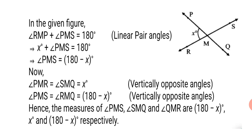Now we can find the vertically opposite angles. Angle PMR equals angle SMQ equals x degrees — reason: vertically opposite angles. Angle PMS equals angle RMQ equals 180 minus x degrees — reason: vertically opposite angles. Hence, the measures of angle PMS, angle SMQ, and angle QMR are 180 minus x degrees, x degrees, and 180 minus x degrees respectively.